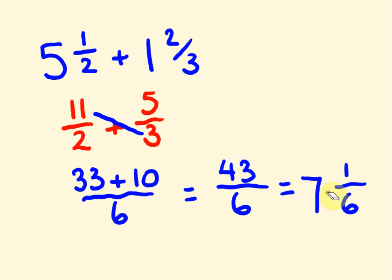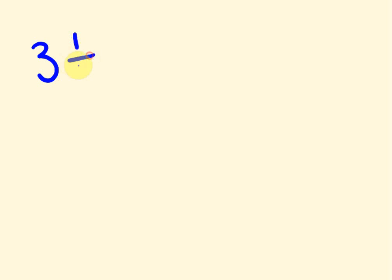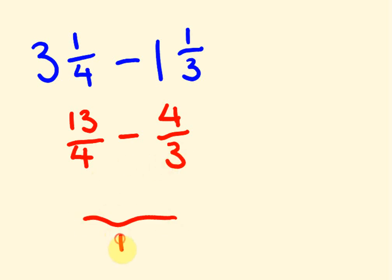Now let's try a subtraction one: three and a quarter take away one and a third. First off, we've got mixed numbers, so we have to turn them into improper fractions. It's the same sort of process, just taking away this time. So we put the four down here — three times four is twelve, plus one is thirteen. Take away. Three on the bottom — one times three is three, plus one is four.